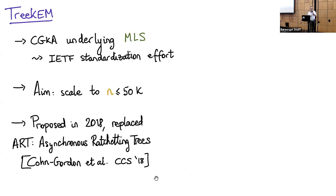Let's talk about TreeKEM. TreeKEM is the CGKA underlying MLS, which stands for Message Layer Security. It's a working group by the IETF trying to standardize group messaging, and its aim is to scale to up to 50,000 users. These efficient key rotations are really important because we're talking about very big groups. To give a historical note, this was proposed together with MLS in 2018, and replaced ART, which stands for Asynchronous Ratcheting Trees.